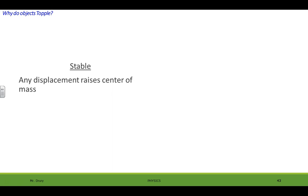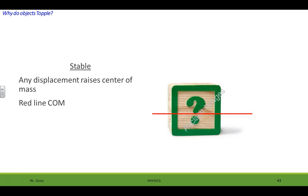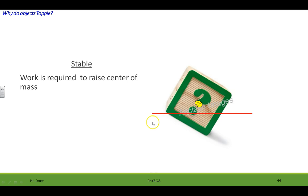If they're in a stable equilibrium, any displacement raises the center of mass. So let's take this block and the red line will represent the center of mass, the line of center of mass. The smiley face will be the center of mass, and if we lift it or rotate it, the center of mass has to go up, and for it to go up we had to actually do work, so it's not going to naturally do that, so it's a stable equilibrium.